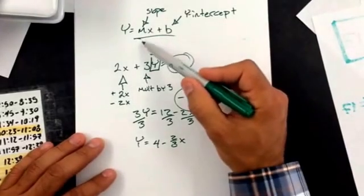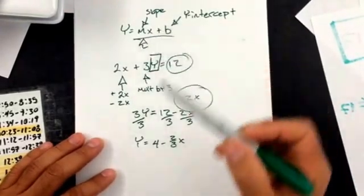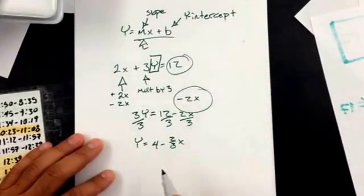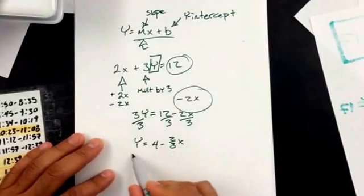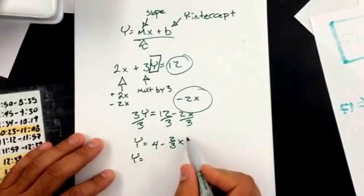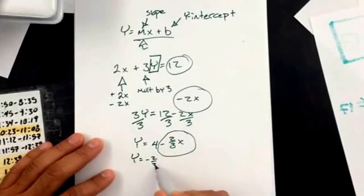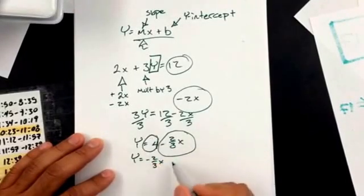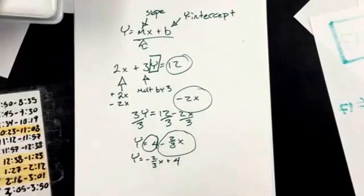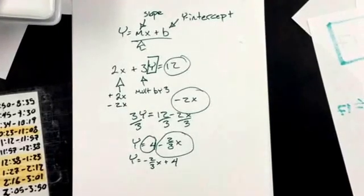Now slope intercept form says that I want the slope first and the y intercept second. So I'm going to reverse the order of this. When I reverse the order of it, it keeps its sign. So this is negative, it's going to be negative here. This is positive, it's going to be positive here. So that's solving for the y. I got the y by itself and now I can graph it or do whatever else I need to do.